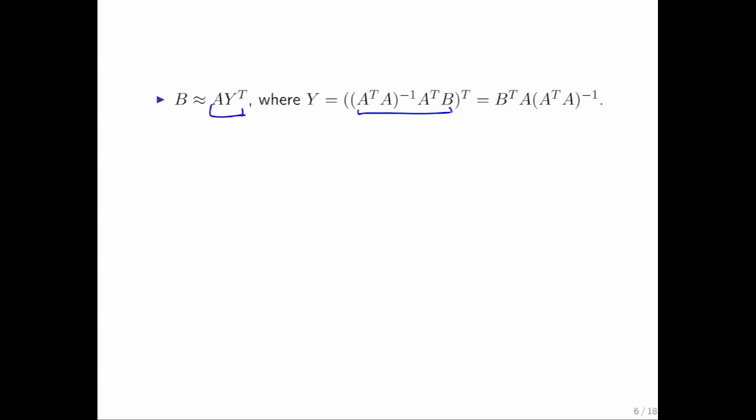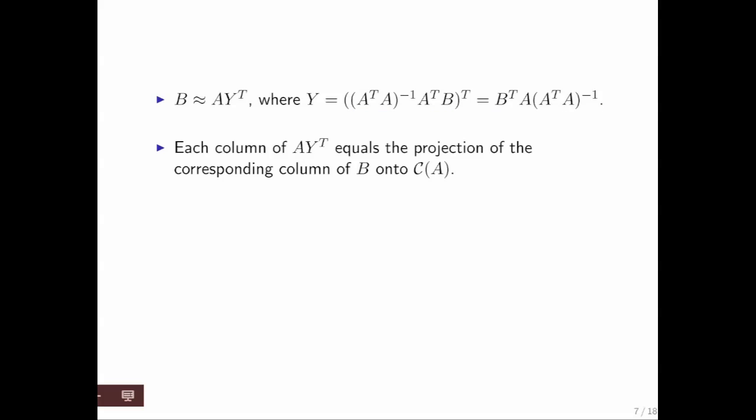And that matrix is just the transpose of what we just used in our approximation in the previous slide, which can then be written as such. Each column of A times Y transpose equals the projection of the corresponding column of B onto the column space of A. If we only have two columns in A, then this is known as a rank-2 approximation of B.